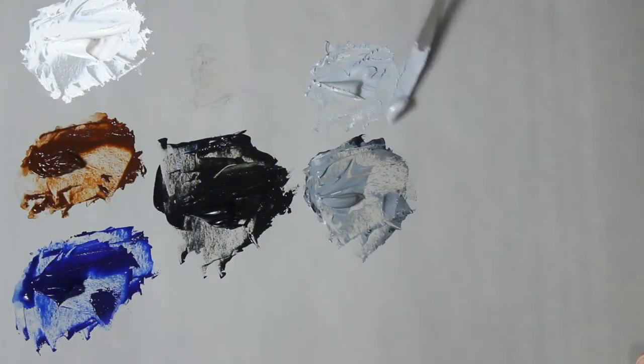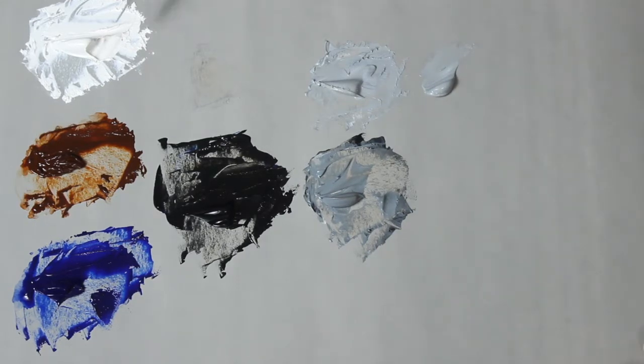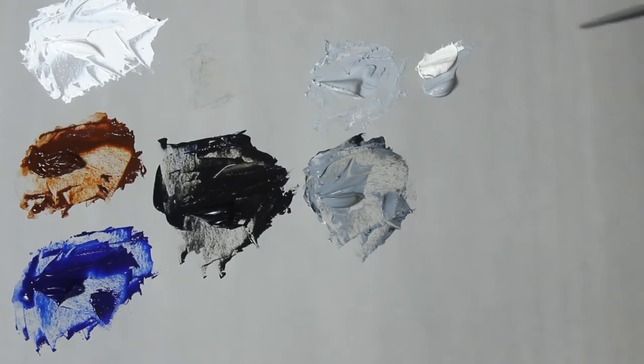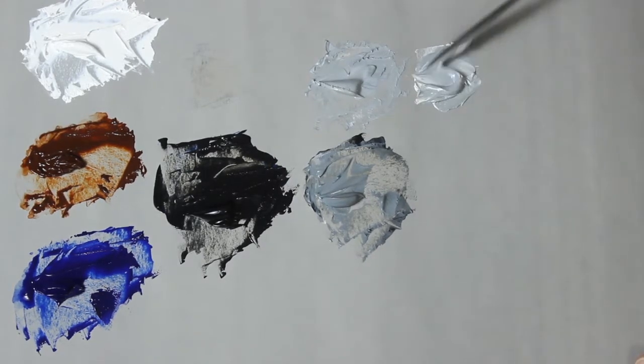Again, I'll take some of my newly created 25 percent gray, and again, I'll add an equal amount of white. This new mixture divides the percentage in half again, so we now have a 12 and a half percent mixture by volume.